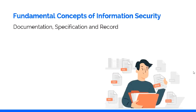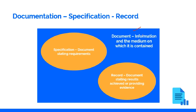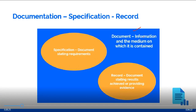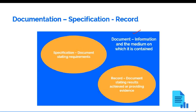Let us begin with documentation, specification, and record — what is the difference between all of them? You can see a big image on the screen, but for the moment just listen to me. What is a document? A document is the information and the medium on which it is contained. A document can be a paper document, a physical document, or an electronic document — anything that has information on it is a document.